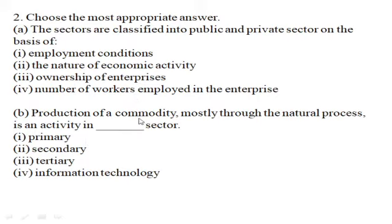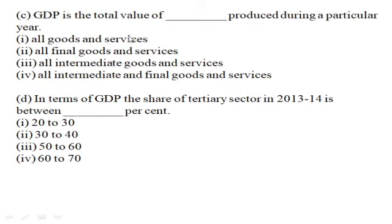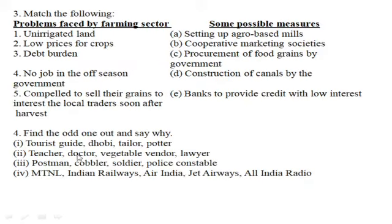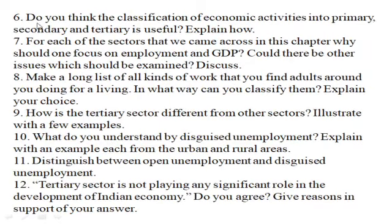Production of a commodity mostly through natural processes is an activity in — the primary sector, using natural processes. GDP is the total value of goods and services produced. In terms of GDP, the share of the tertiary sector in 2013-14 is between a given range. For the matching exercise, match items like unirrigated land, low prices for crops, no job in the off season, and compulsion to sell grain to the local trader soon after harvest.